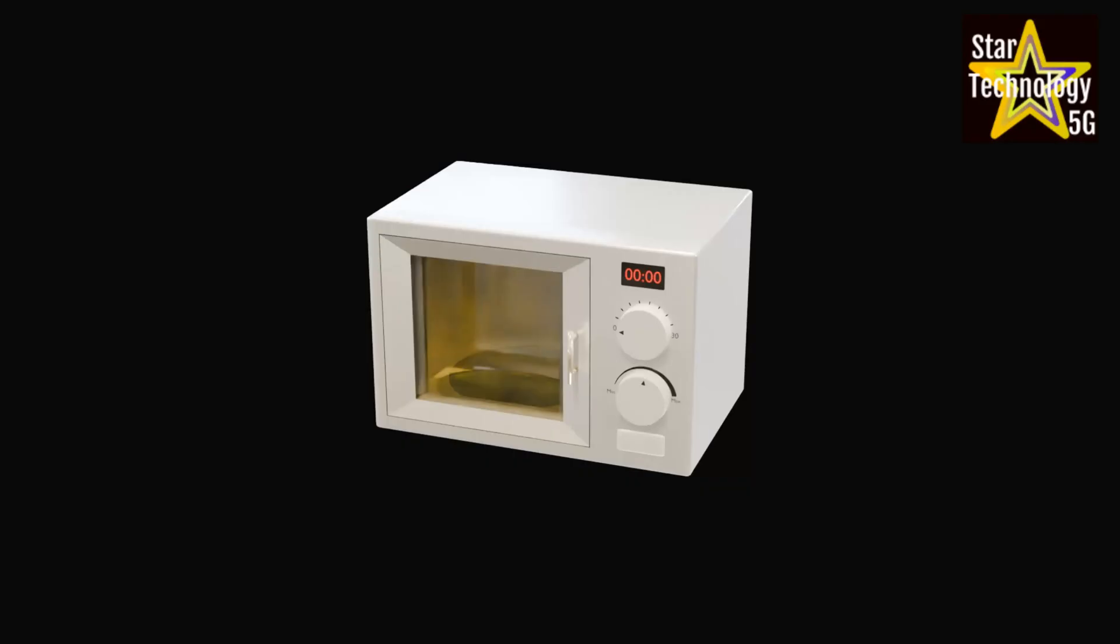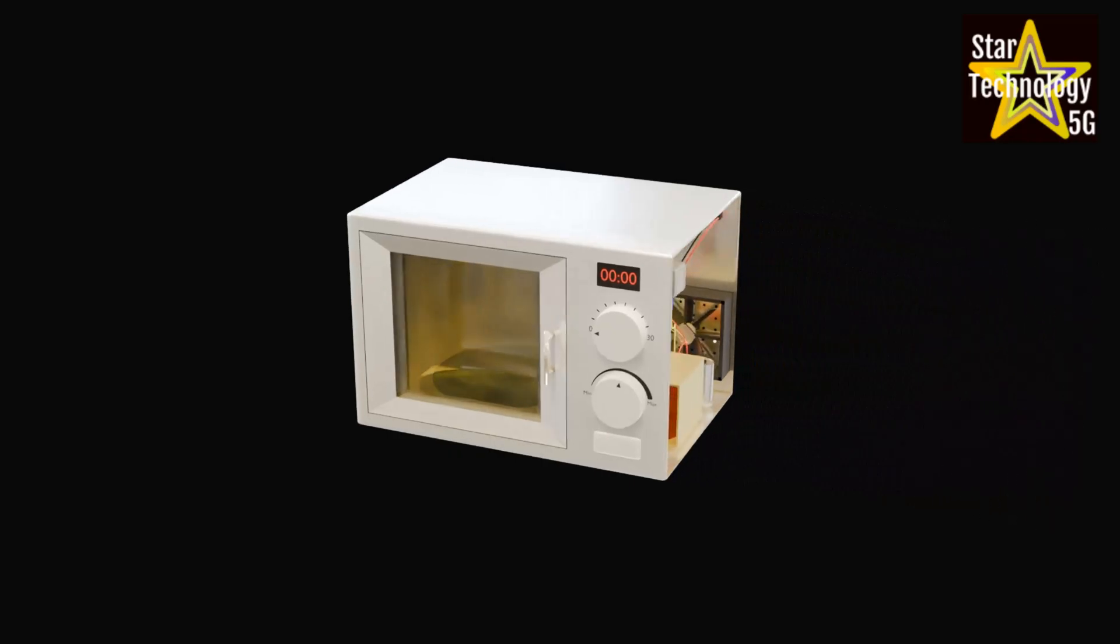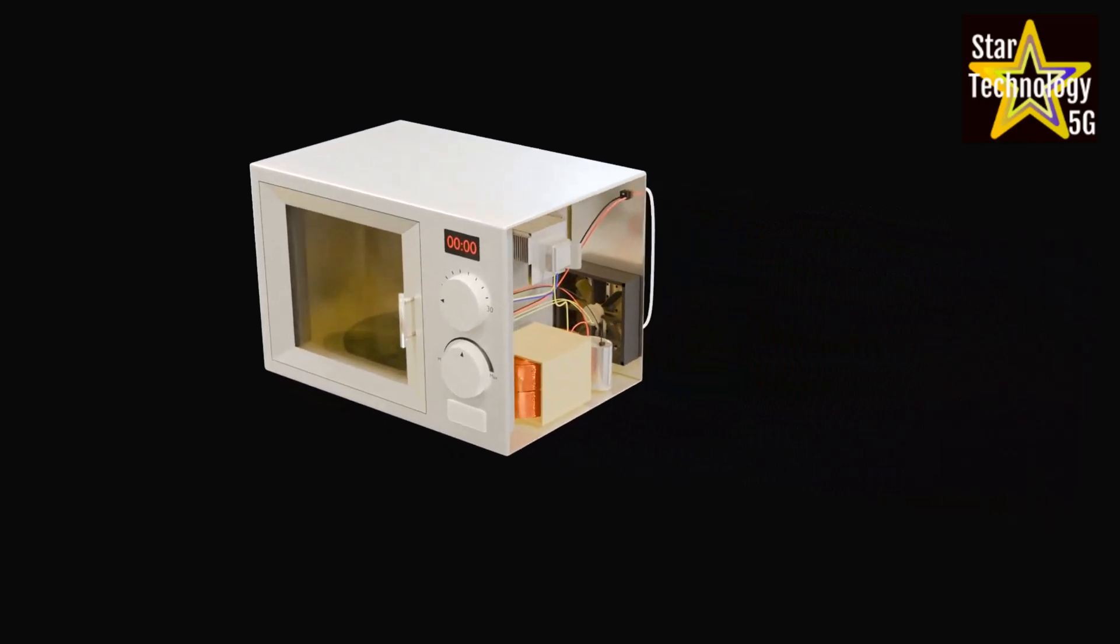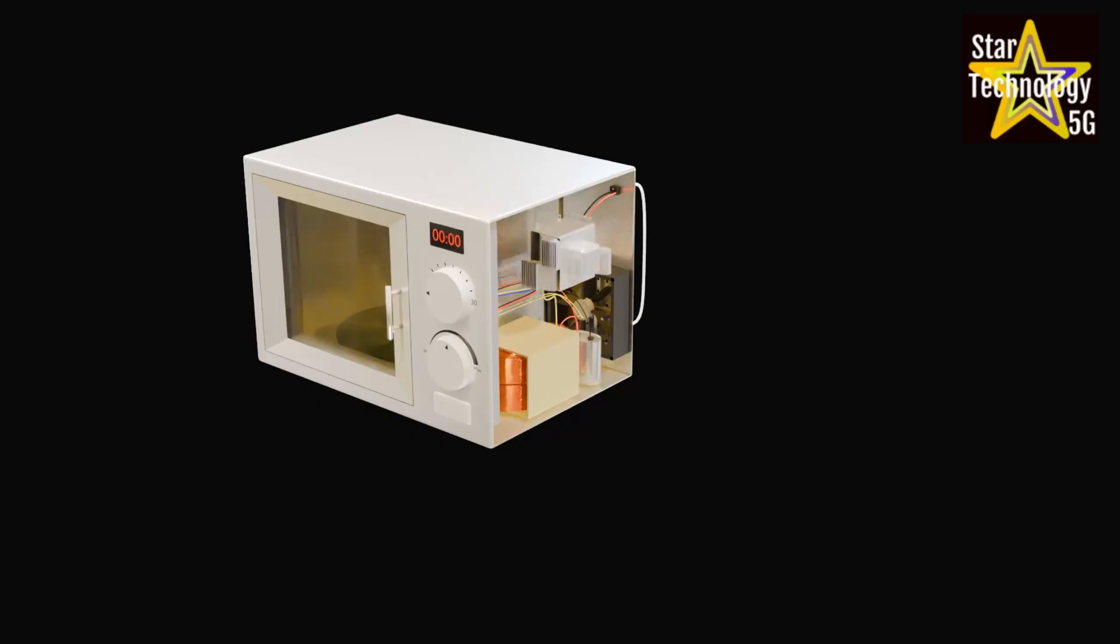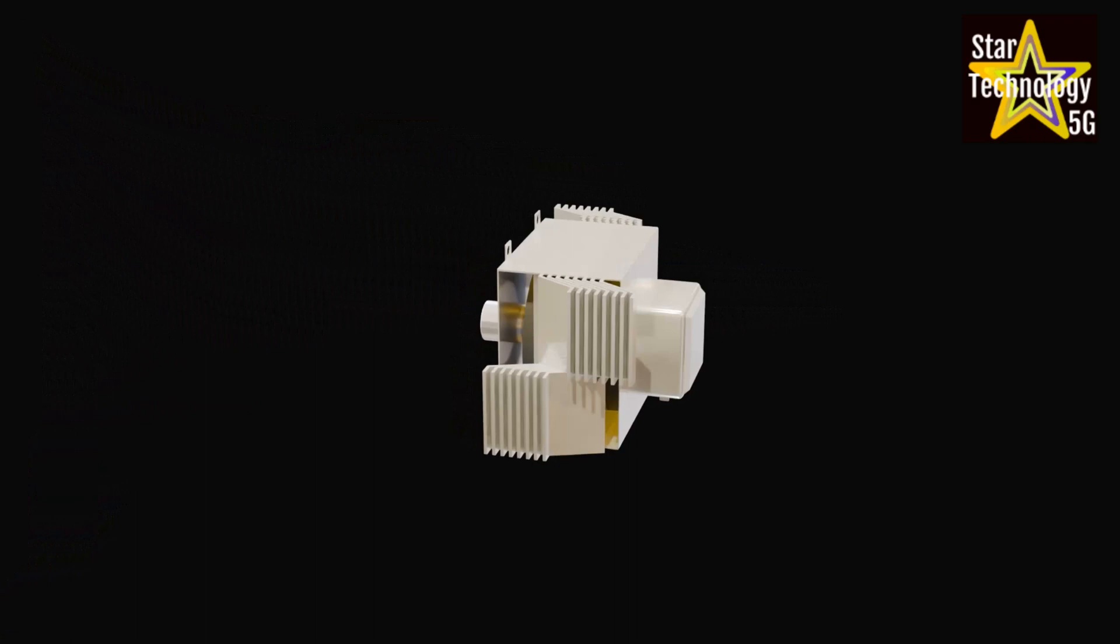This is a microwave oven. If we remove its side cover, we will find some electronic devices inside. This is the main device of the microwave oven. The name of this device is magnetron.